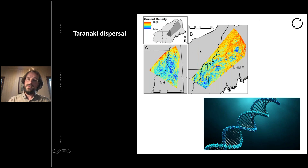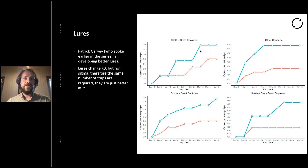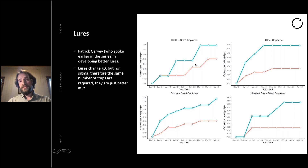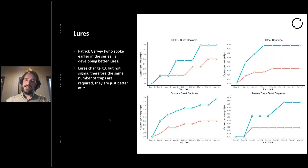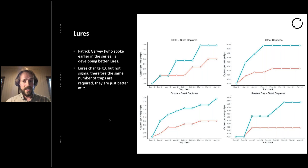Patrick Garvey has been developing new lures, and lures from ferret bedding look extremely positive — over time you get far more catches with those than with any other bait. However, this changes G-naught, which is the probability of capture in the centre of an animal's home range — it doesn't change sigma, which is the home range size. Therefore, while this will increase the likelihood of catching an animal, you still need a trap in every animal's home range for it to work. You can never get around the necessity of thousands of traps if you're doing it by trapping.